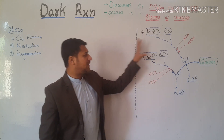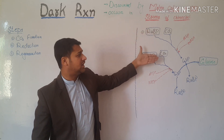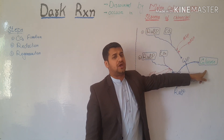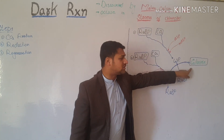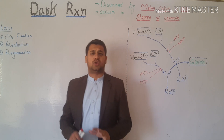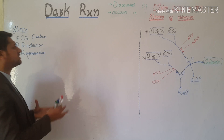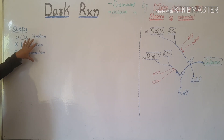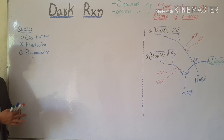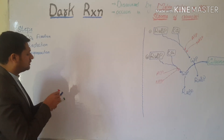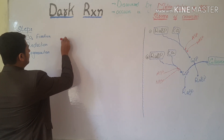The dark reaction occurs twice for the synthesis of one glucose molecule. There are three steps of this process: the first step is carbon dioxide fixation, the second is reduction, and the third is regeneration.